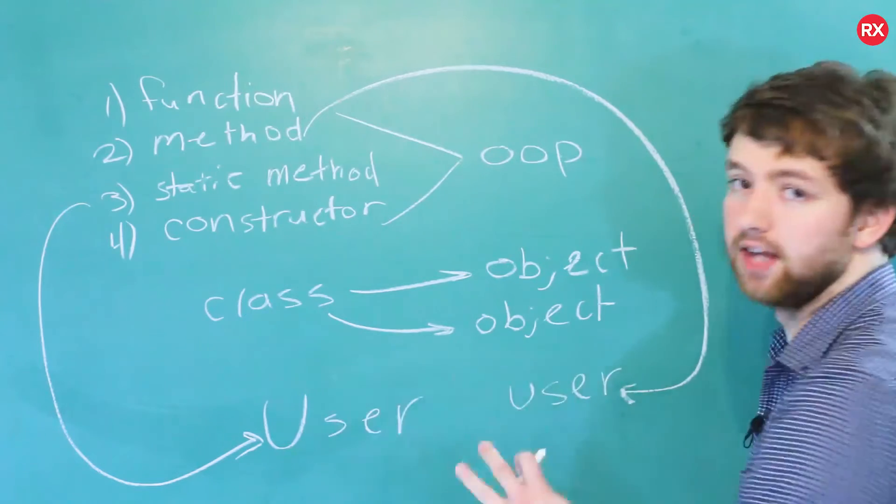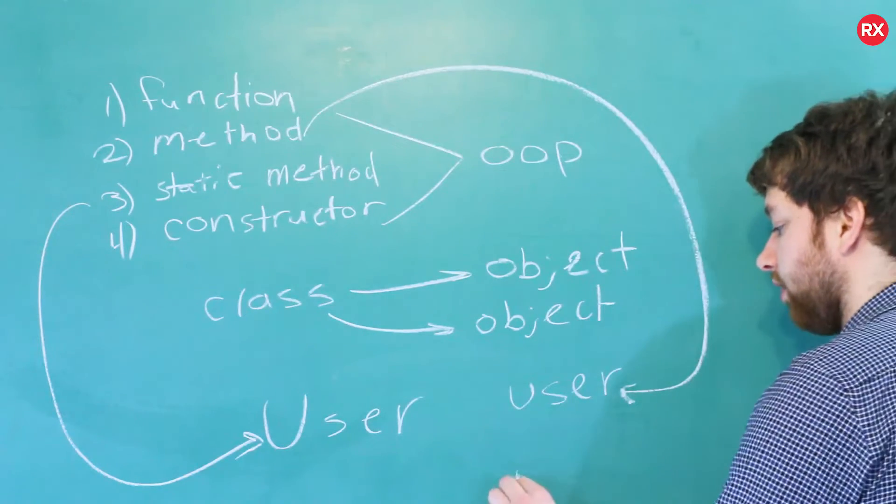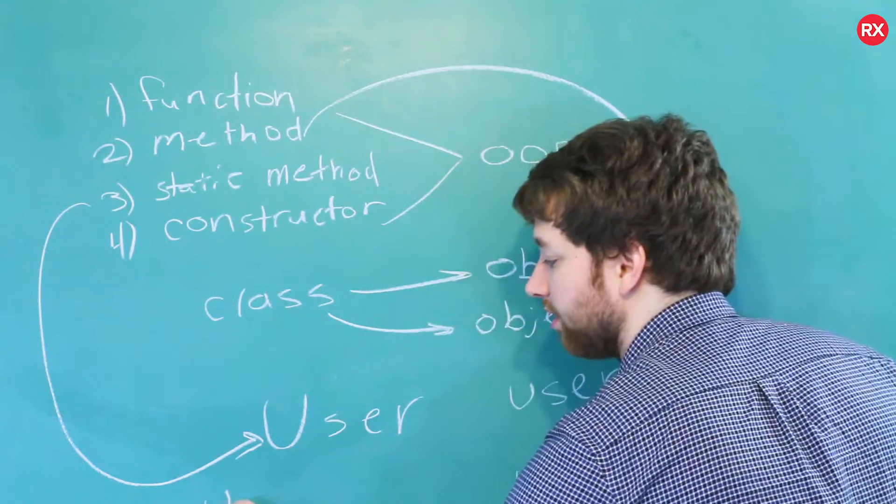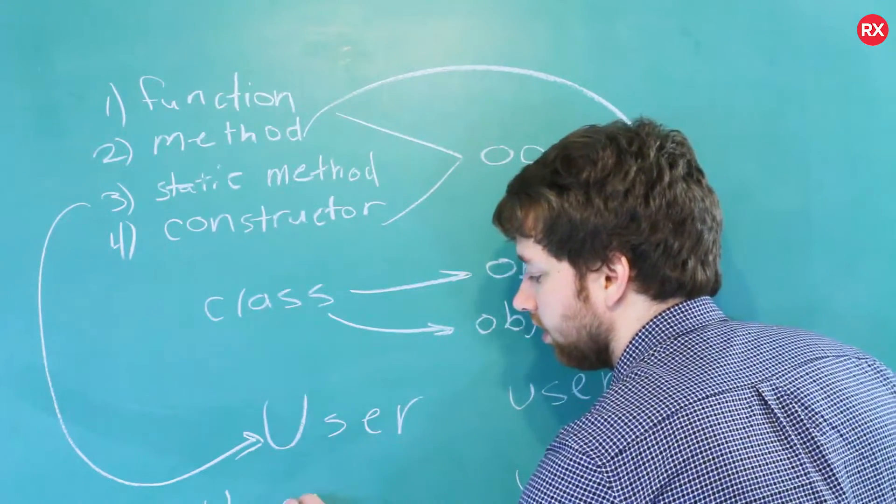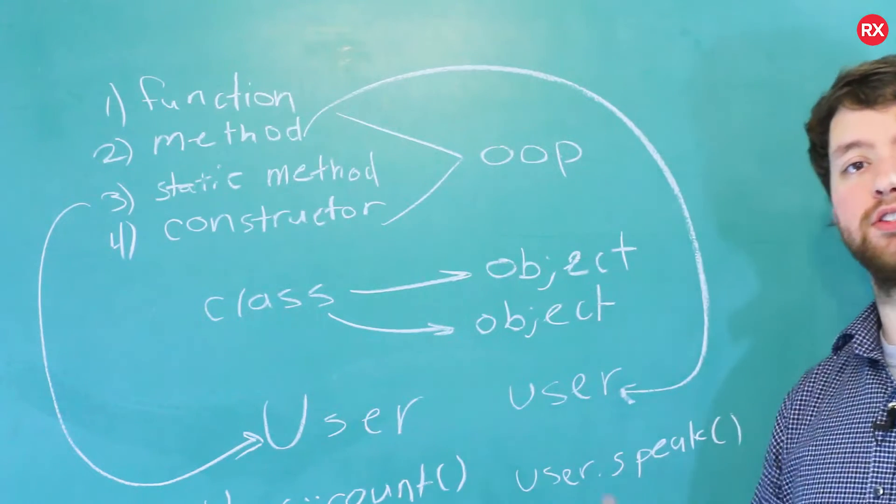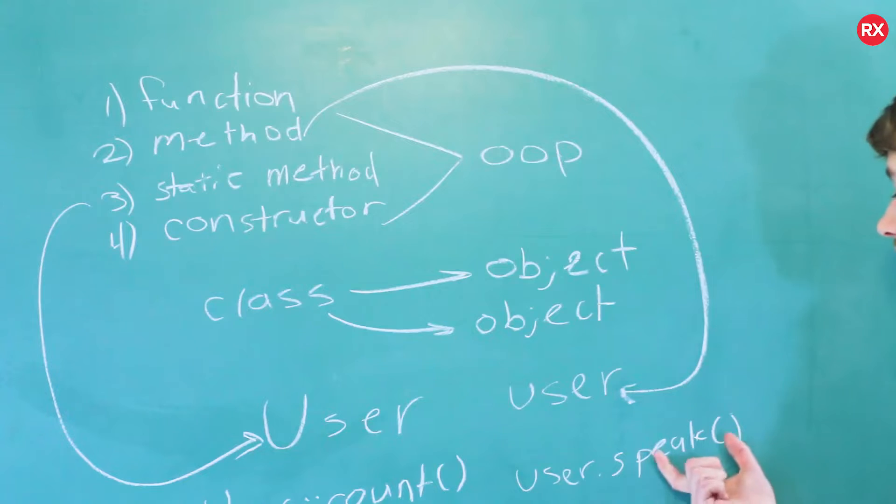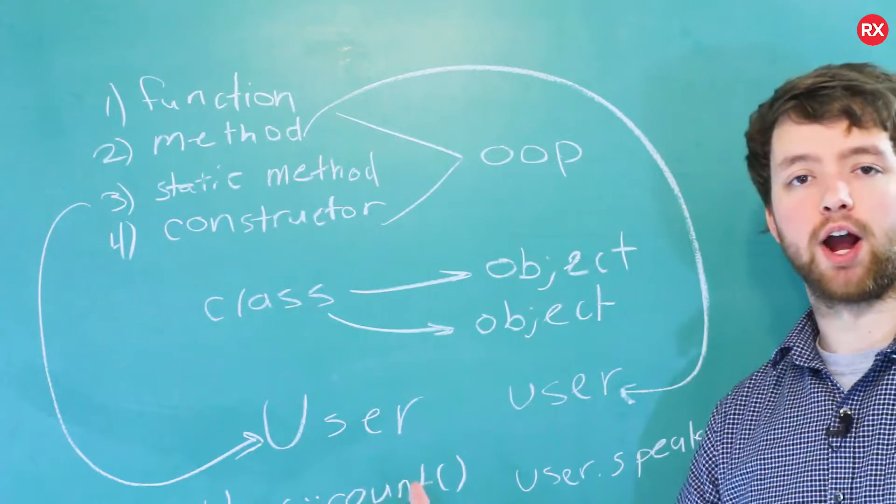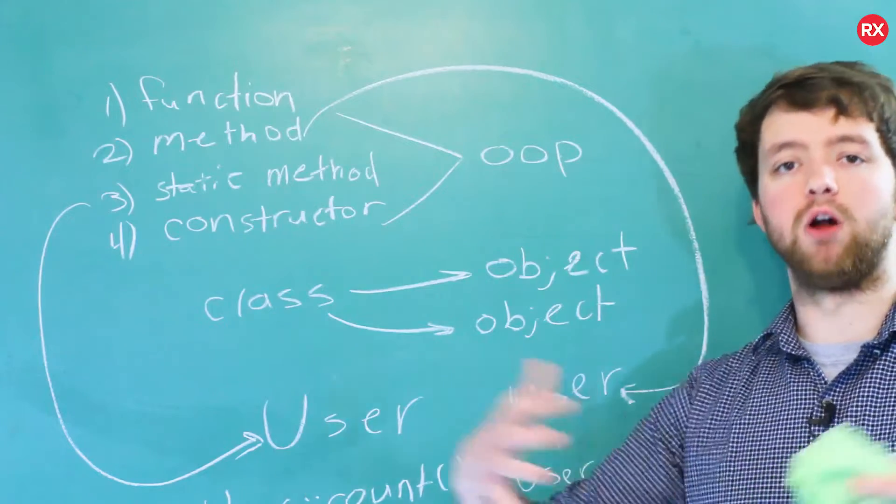So we might have user.speak, and then for a static method, we might say user.count, which might get the total number of users. Notice the difference in functionality. This speak refers to a specific user, whereas count describes users in general, all of the users.